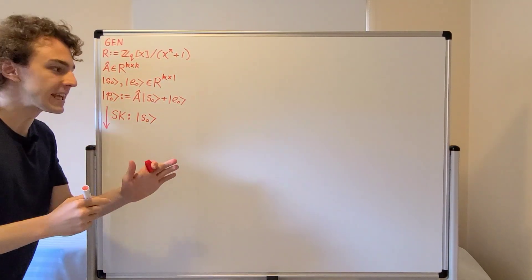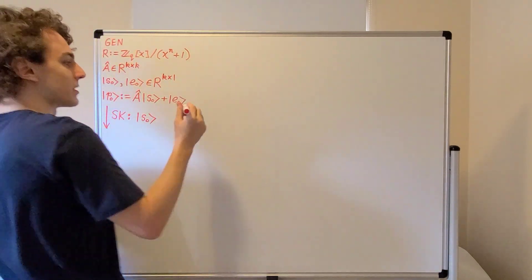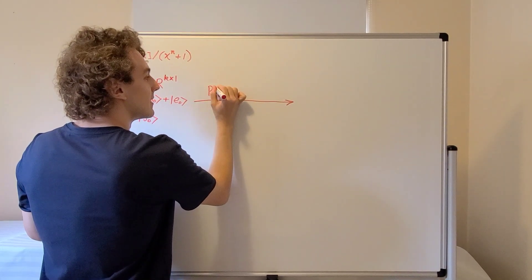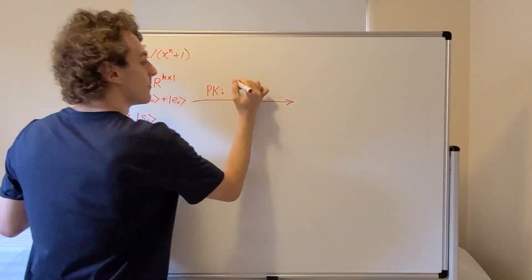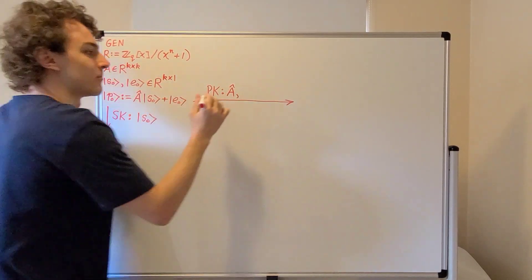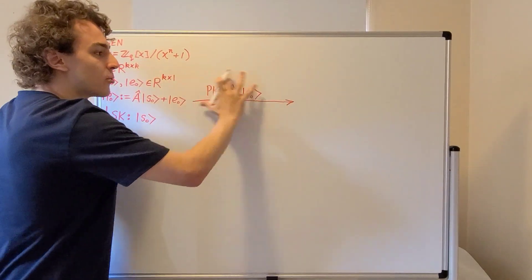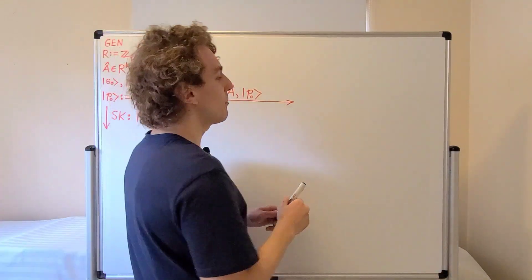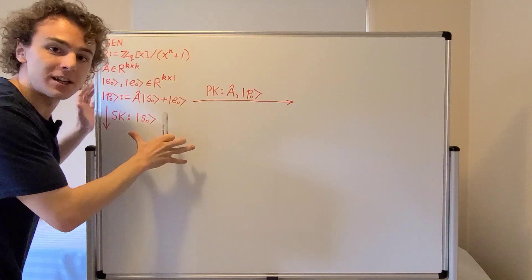There's also going to be a public key, which this participant is going to send through a public channel. The public key PK will include the matrix A and the public column vector P0. Now this is being sent through a public channel, and there's going to be another participant who is going to do encryption. This is the key generation procedure, and now we can do the encryption procedure.